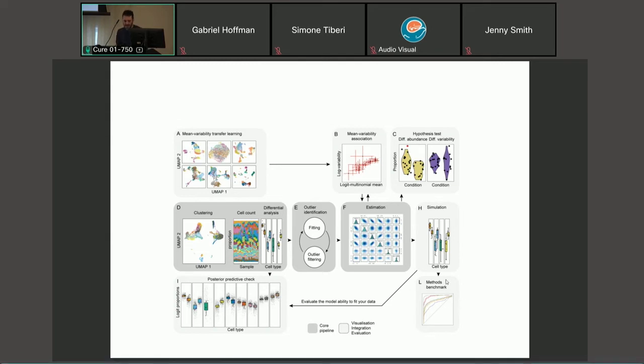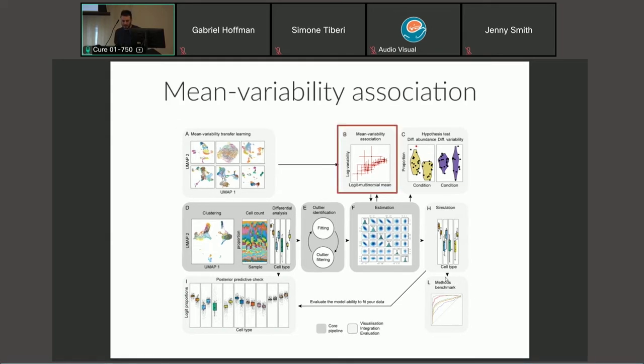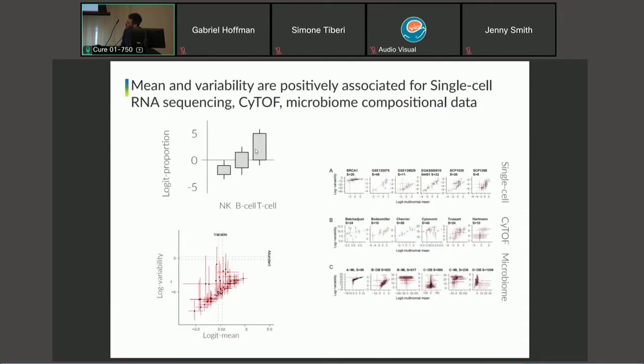Let's start with this mean-variability association. If we represent proportion in a linear dimension, we take logit proportion. One thing we observe is that for abundant cell types, such as T cells, we observe relatively higher variability compared to rarer cell types. This is the same plot as before, taken from a real dataset. Each point is a cell type, so we have roughly 30 cell types here.